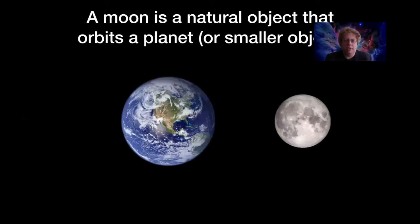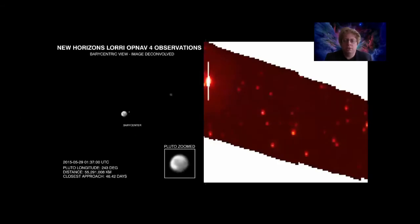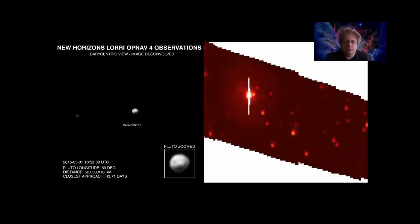As probably all of you are familiar, a moon is a natural object that orbits a planet. We have a moon you can see in the sky. It's one of the larger moons in our solar system, even though Earth is not one of the larger planets in our solar system, which makes it a little bit unusual. But there are moons orbiting other planets as well.